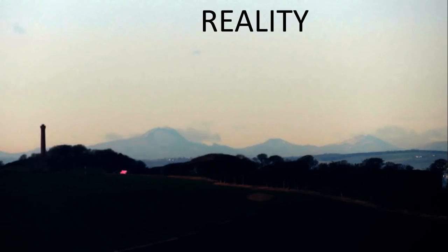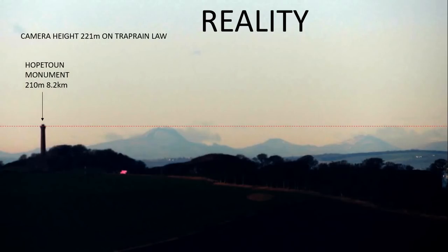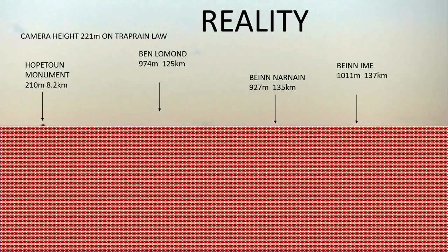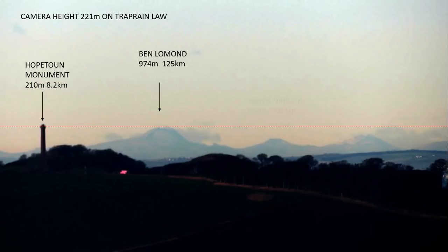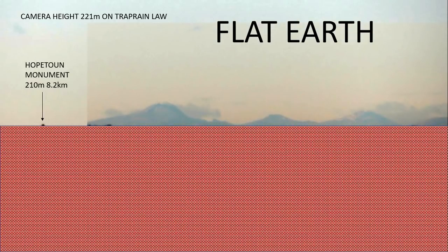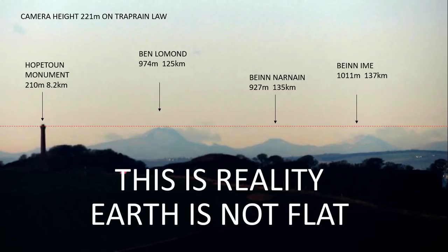So this is what we observe in reality: camera height, the monument, the mountains. If we imagine a wall at 210 meters, with my camera at 221 meters, I would not be able to see the mountains at all. If the earth was indeed flat, I ought to be able to see those mountains above the wall. What I've done is simply crop out a little piece of that picture and paste it in so that you can see the mountains above the height of the wall. But this is the reality — this is what we actually observe, and it proves that the earth is not flat.